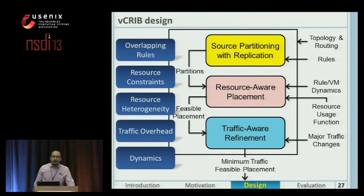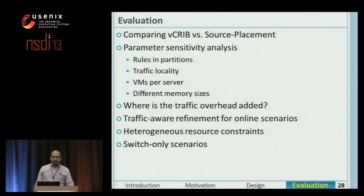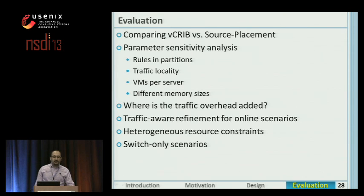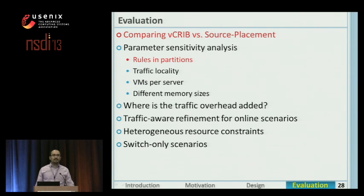So to recap, VCRIP's design addresses all five challenges ranging from overlapping rules to dynamics. For evaluation, we compared VCRIP versus source placement — remember that source placement is the current practice that saves rules on the source of traffic. We also did parameter sensitivity analysis and checked where the traffic overhead is added in the network, as well as experiments for online scenarios, heterogeneous resources, and cases where we can only save rules on the switches. In this presentation, I show the results only for the comparison of VCRIP and source placement and the effect of rules in partitions on VCRIP performance.